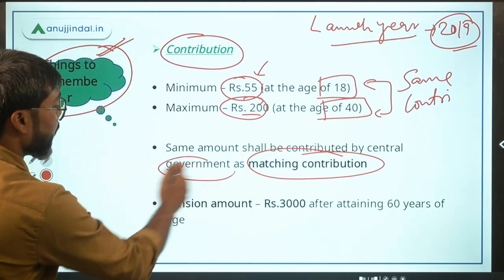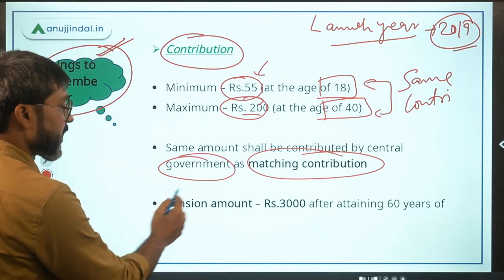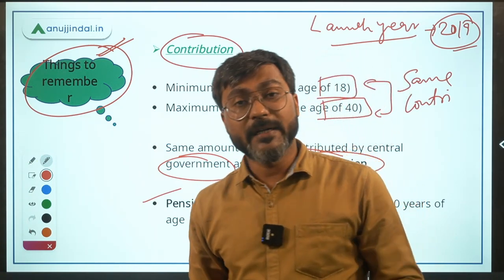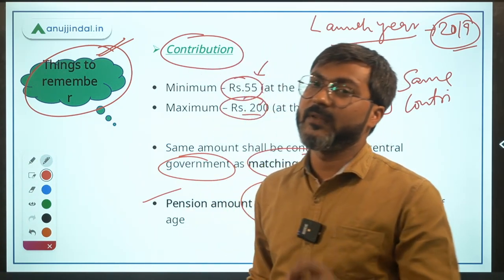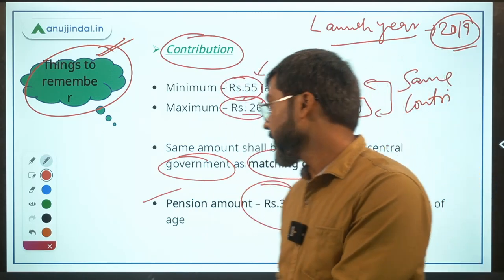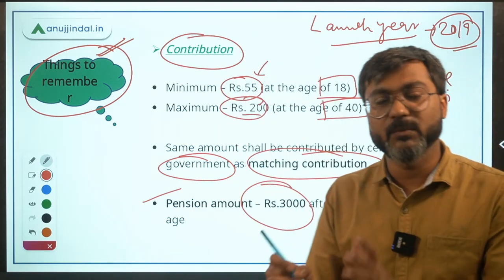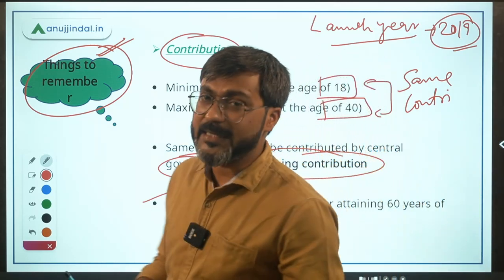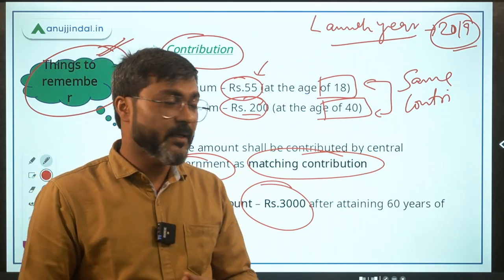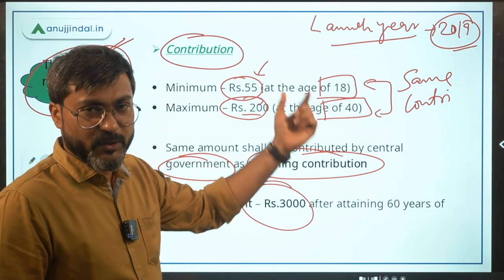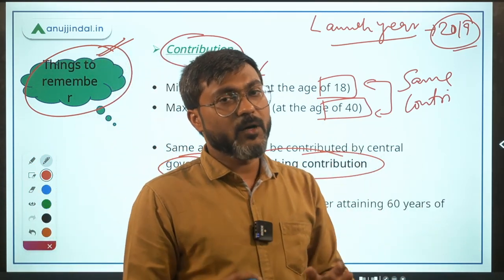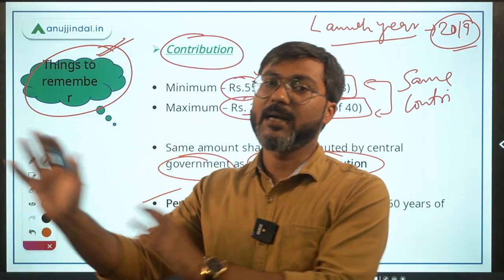The central government bears the full matching contribution — state government has no role here. After attaining 60 years of age, the farmer will get Rs. 3000 per month as pension. The minimum contribution period is 20 years, because if a person enters at age 40, they must contribute for 20 years until they turn 60.